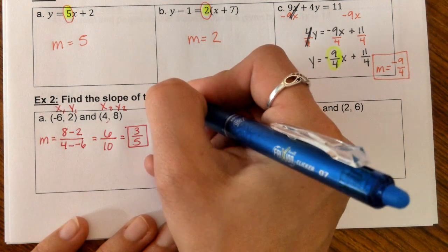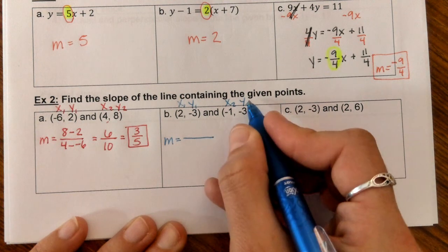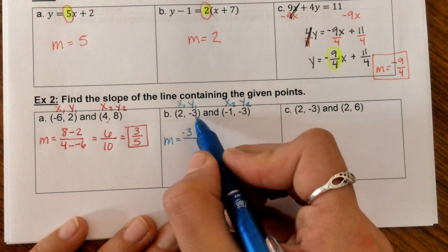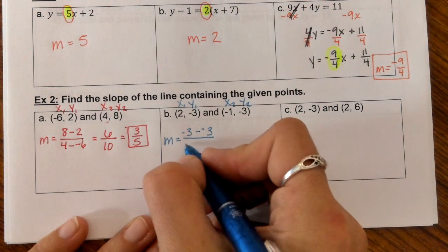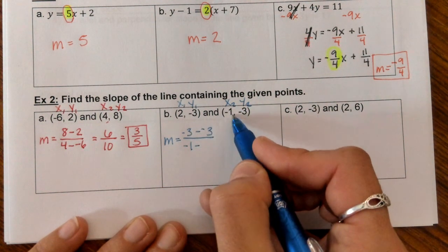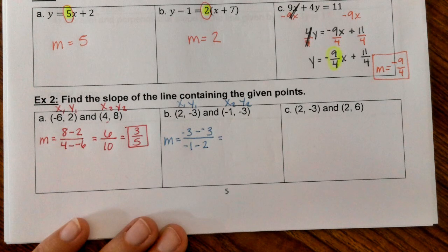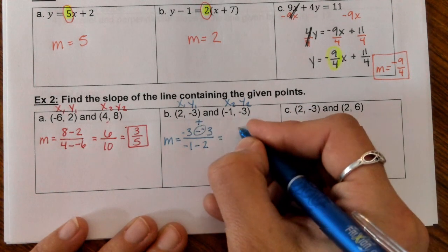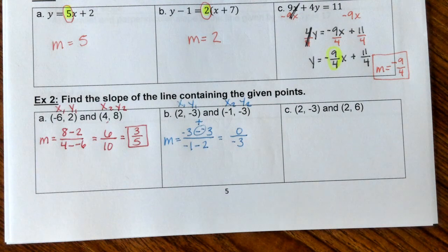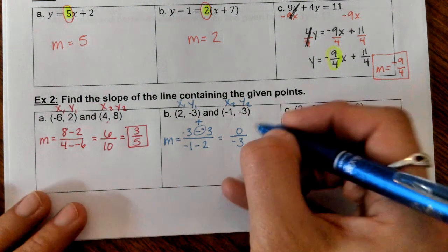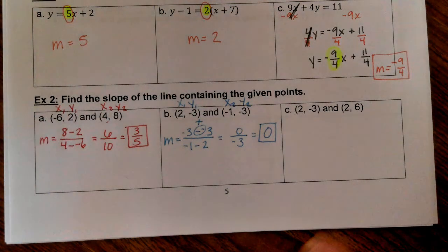Take a look at B. We have X1, Y1, X2, Y2. Let's fill in our formula. We have Y2, negative 3, minus Y1, negative 3, on the bottom X2, negative 1, minus X1, which is 2. Negative 3 minus negative 3 is just like saying negative 3 plus 3, we end up with 0. Negative 1 minus 2 is going to give us negative 3. If you plug 0 divided by negative 3 into your calculator, it's going to pop up 0. This is a zero slope.